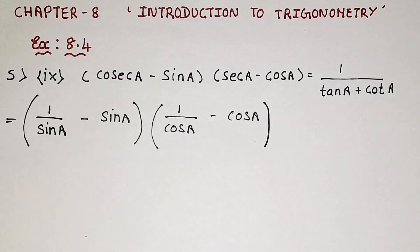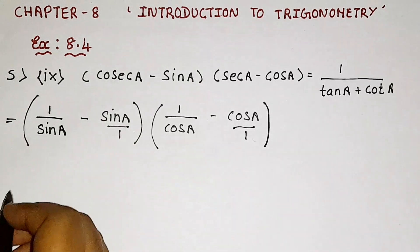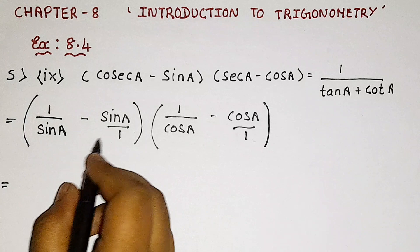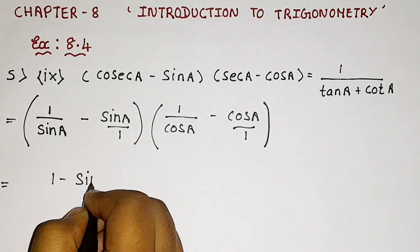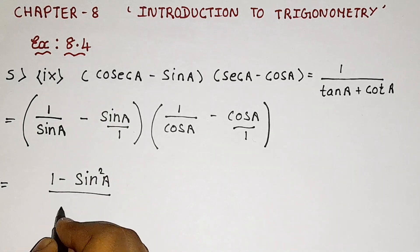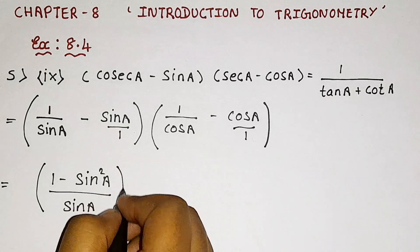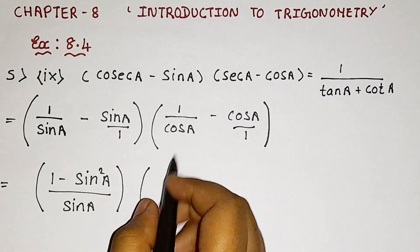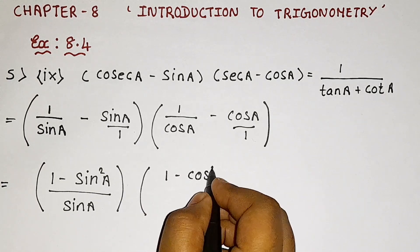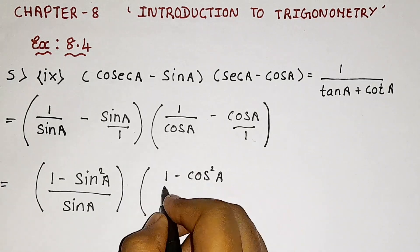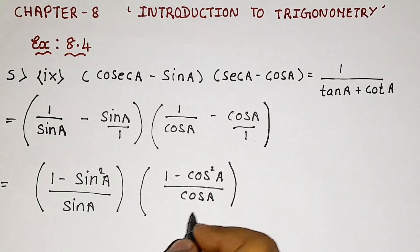So now what we can do is — here nothing is there, so it will come 1; here also nothing is there, so it is 1. When we just take LCM, we will get 1 minus sin squared A divided by sin A, in brackets. Then here also taking LCM, we will get 1 minus cos squared A divided by cos A, in brackets.